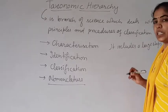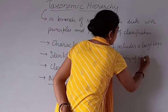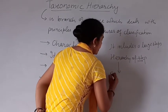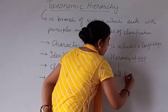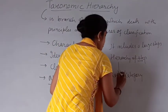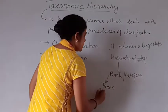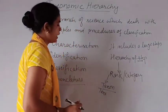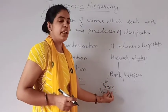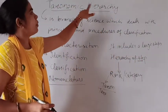We can say it includes a hierarchy of steps. Each step represents a category or a rank. All these steps, ranks, or categories are called a taxon, or in plural, taxa. Each individual step is one taxon, and all these taxa together constitute the taxonomic hierarchy.